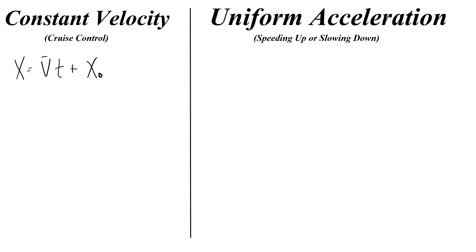For constant velocity there's only one equation. It is position equals average velocity times time plus initial position. You can write this equation a lot of different ways. It's basically just speed equals distance over time, rearranged in fancy letters.